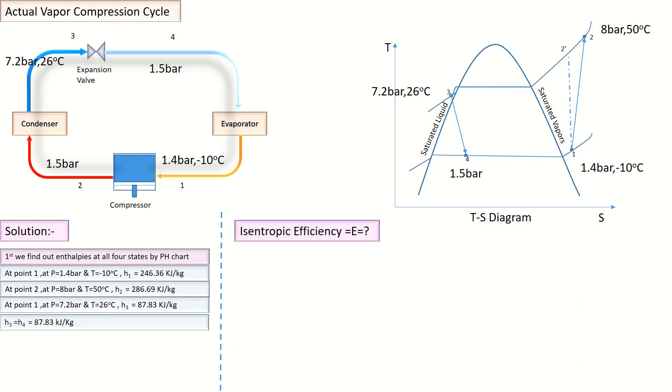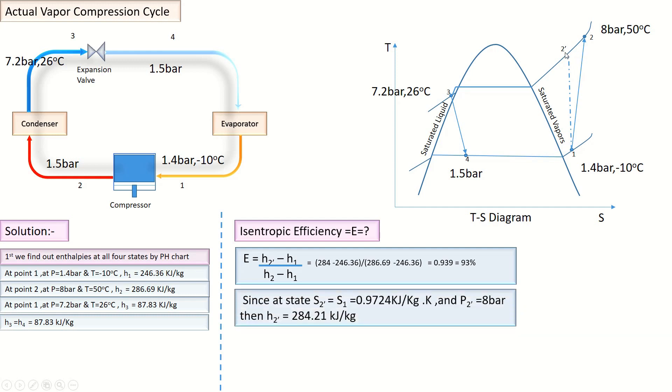Isentropic efficiency can be calculated by the difference of enthalpy in ideal compression, which is 1 to 2', divided by the actual compression 1 to 2. But enthalpy at Point 2' we have to calculate.